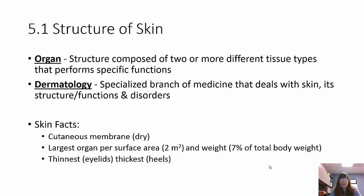Some facts: the skin is a cutaneous membrane, which is a dry membrane. It's the largest organ per surface area and makes up 7% of our total body weight. The thinnest skin is on our eyelids, and the thickest skin is on our heels.